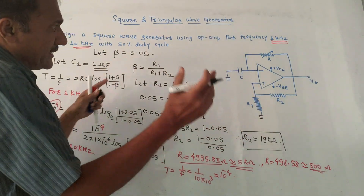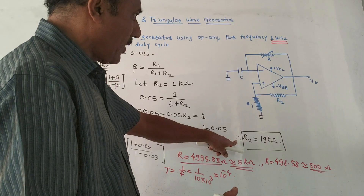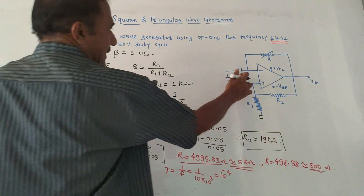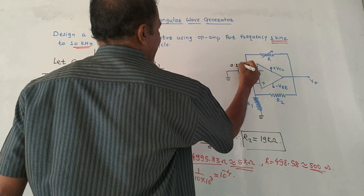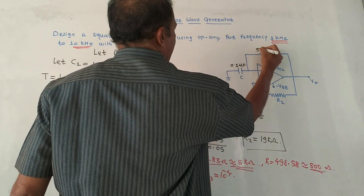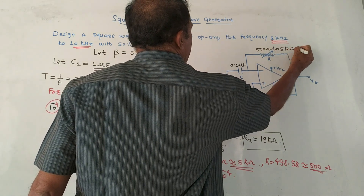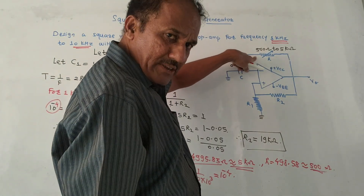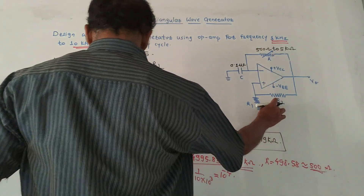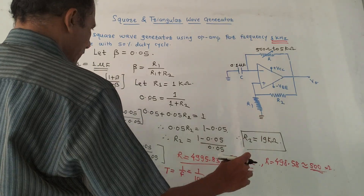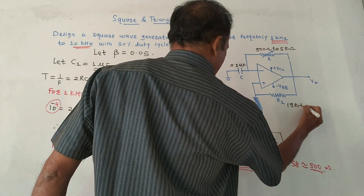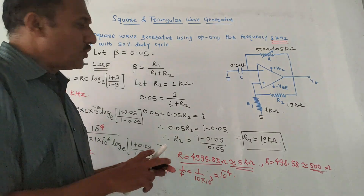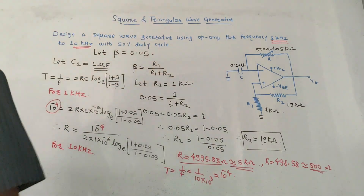Since only limited variations are possible in such questions — if only one frequency is given, calculate R for that frequency — draw the final circuit diagram and label component values: C = 1 µF, R is a variable resistance from 500 Ω to 5 kΩ (you can use a fixed 500 Ω in series with a variable 5 kΩ), R2 = 19 kΩ, and R1 = 1 kΩ. This is the final diagram of the square wave generator. That's it for today's session. Thank you, thanks a lot for watching this video.